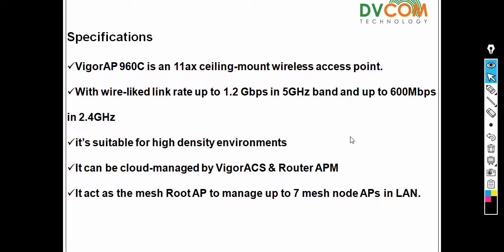The Vigor960AP is an 11ax ceiling mount wireless access point. The 11ax means it supports Wi-Fi 6. The 5 GHz band supports up to 1.2 Gbps and the 2.4 GHz band supports up to 600 Mbps. It is especially suitable for high density environments.